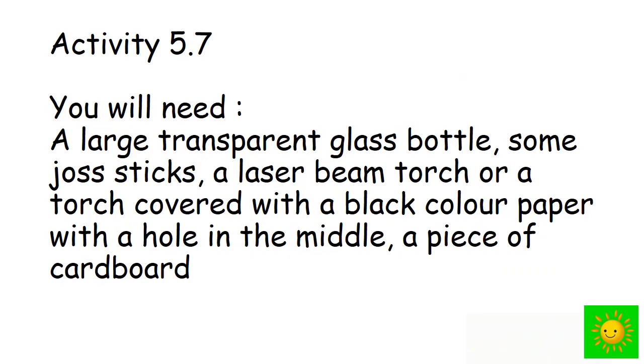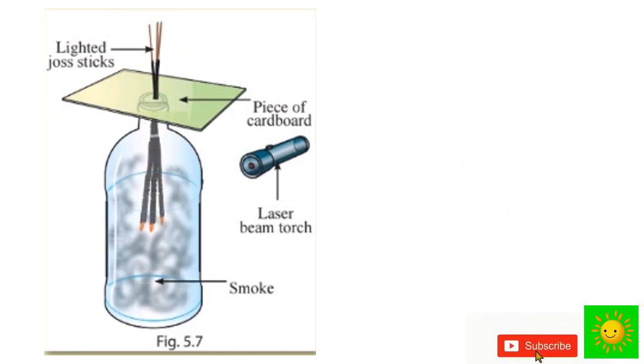Second activity: we need a large transparent glass bottle, some joss sticks, a laser beam torch or torch covered with black paper with a hole in the middle, and a piece of cardboard. What we have to do: first make a hole in the piece of cardboard and insert the joss stick through it, then light the joss stick.